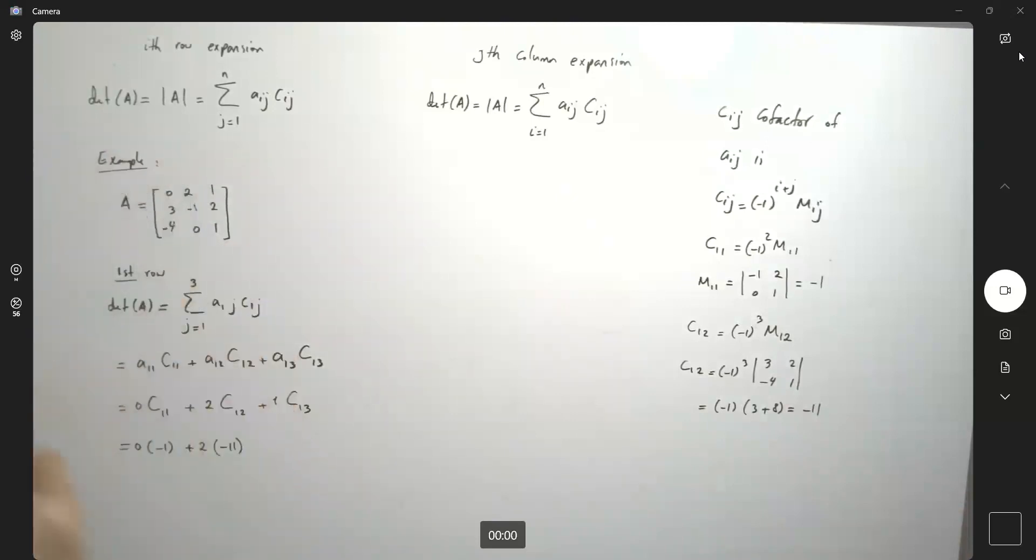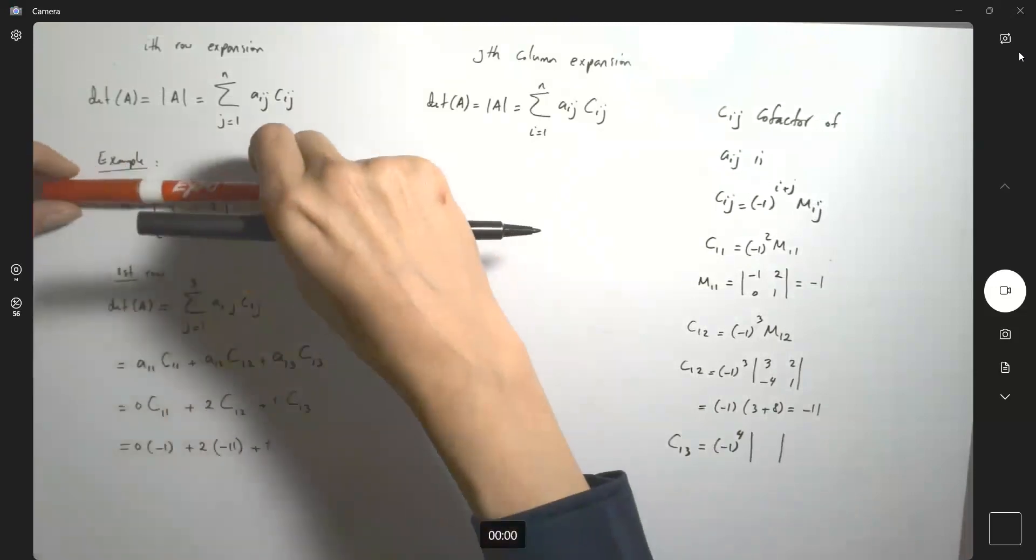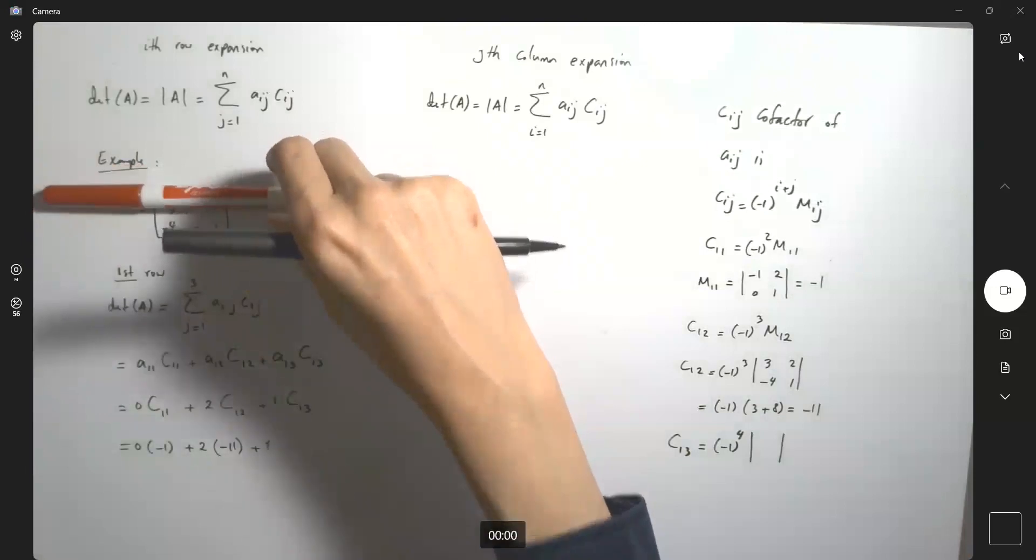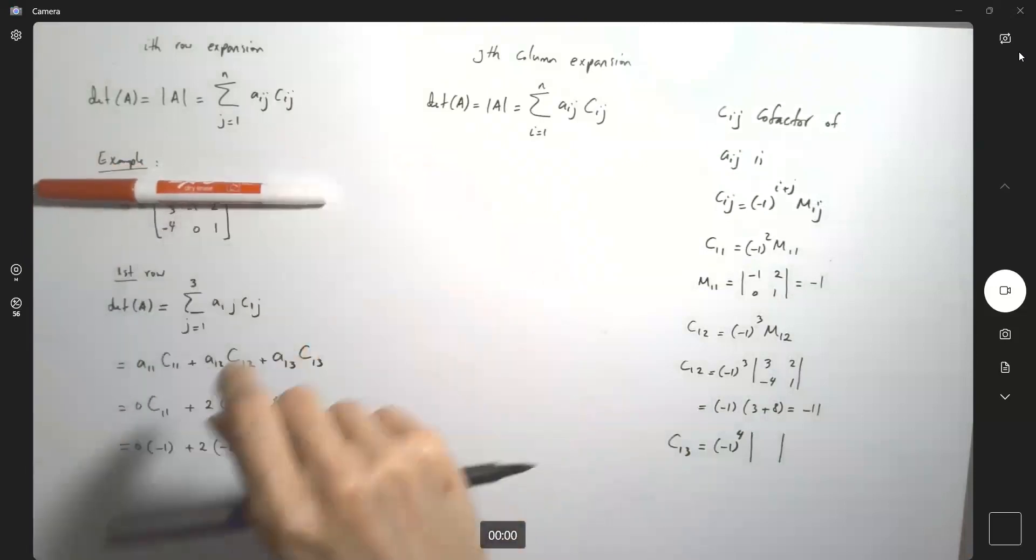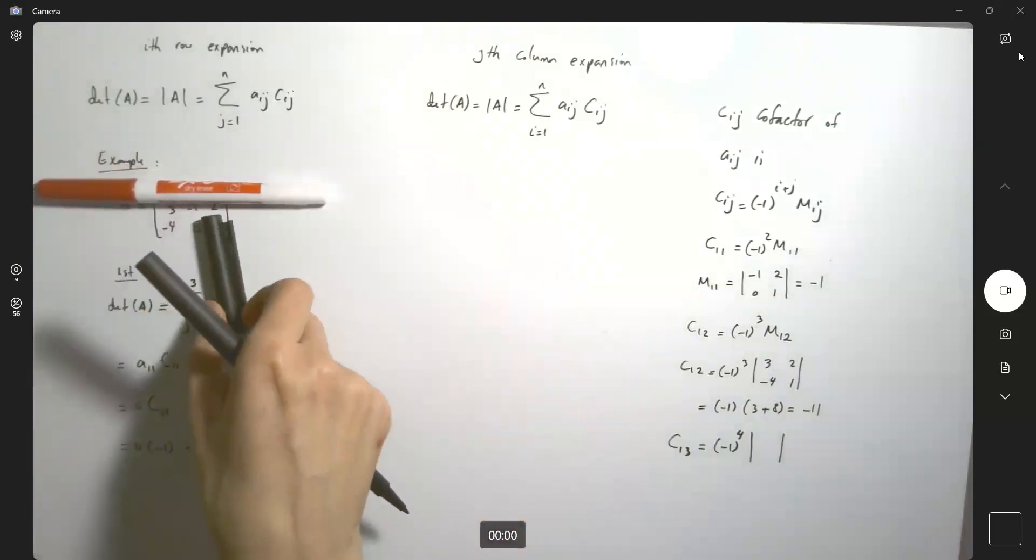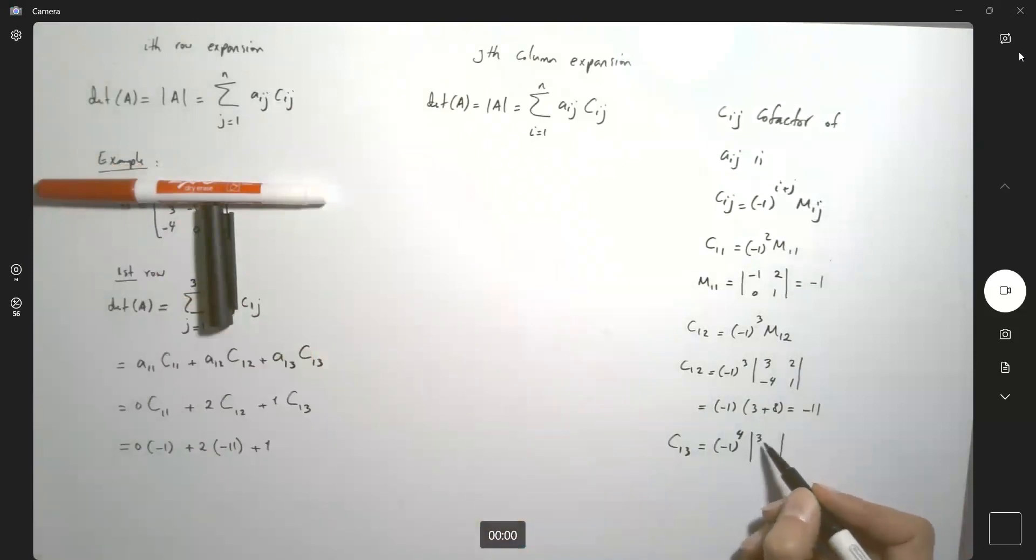And now plus 1 times C1,3. This is (-1)^4 times the determinant. So you're getting rid of the first row and now the last column. What's left? The determinant of matrix 3, -1, -4, and 0.